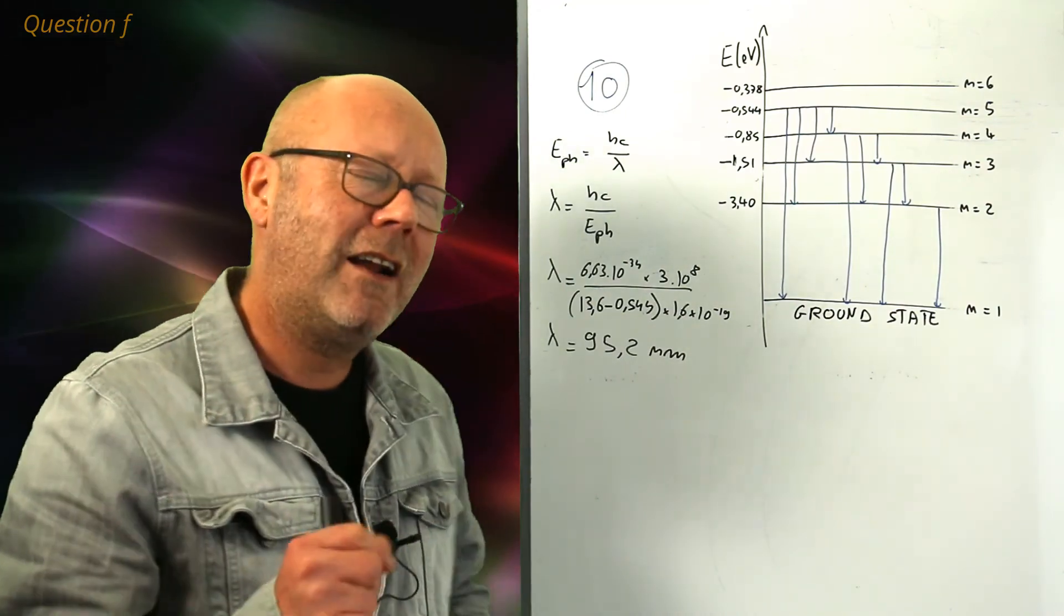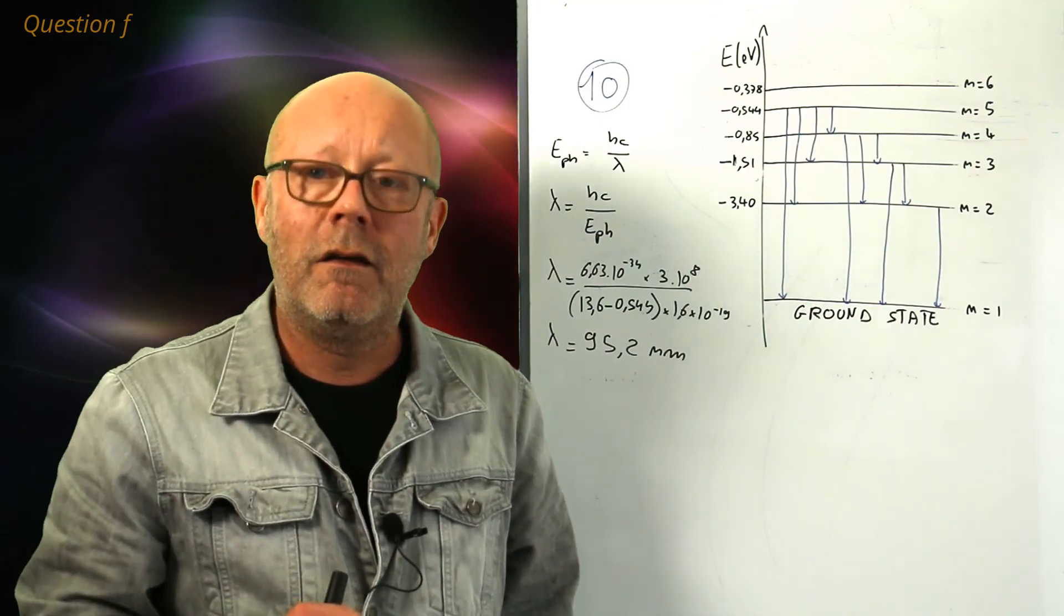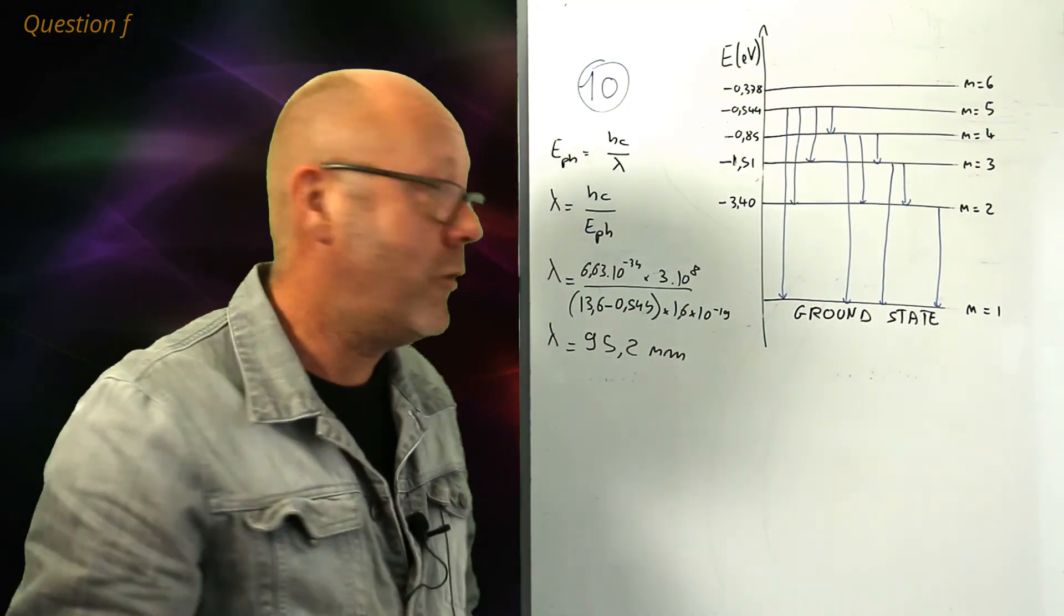700 nanometers is the least energetic light that the eyes can see and corresponds to dark red. So, if you are slightly under, you know, kind of one or two orders of magnitude under 400 nanometers, well, you know it's going to be UV.